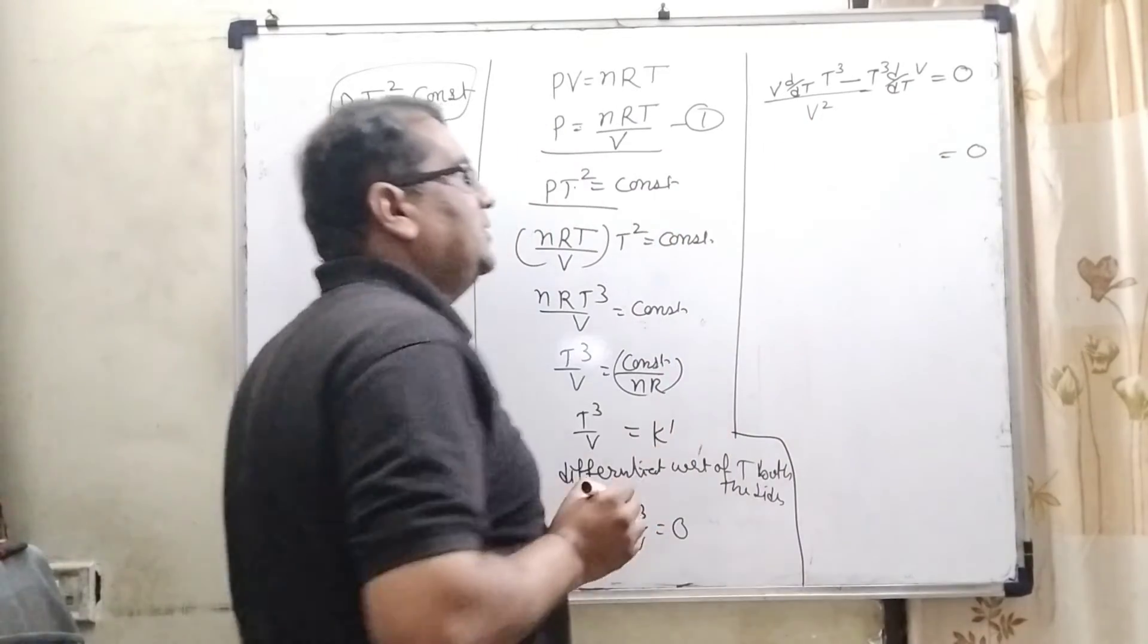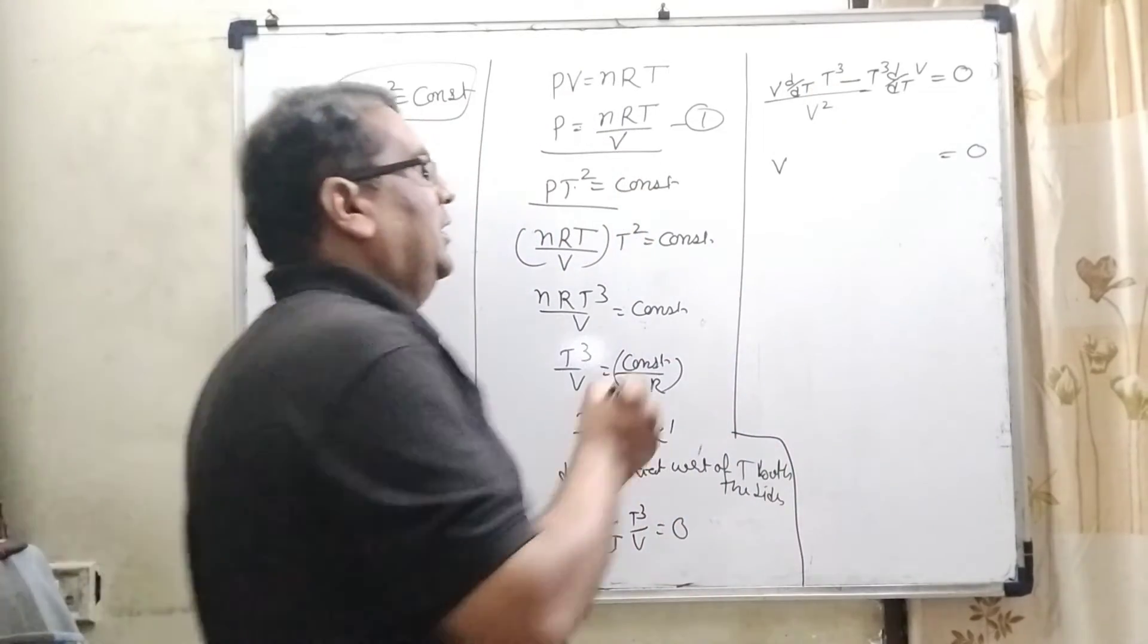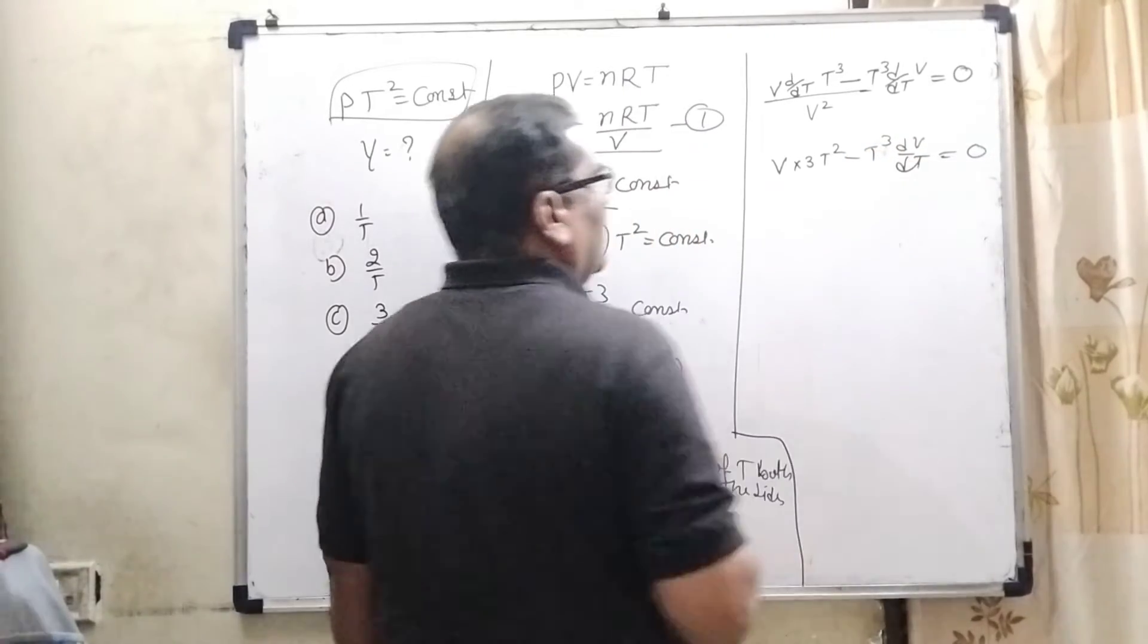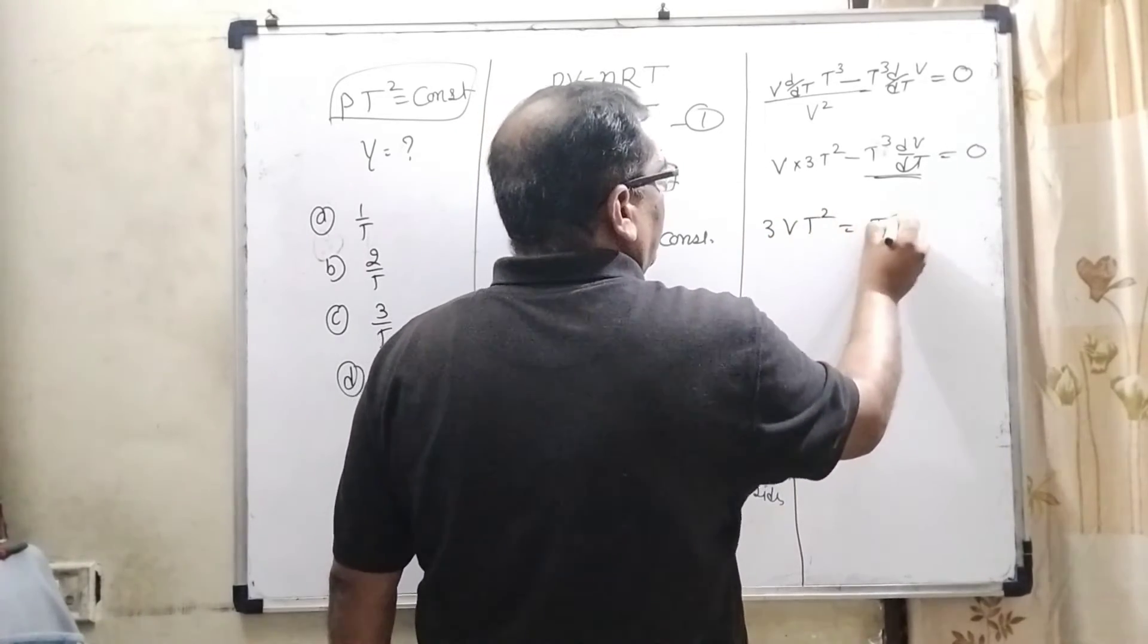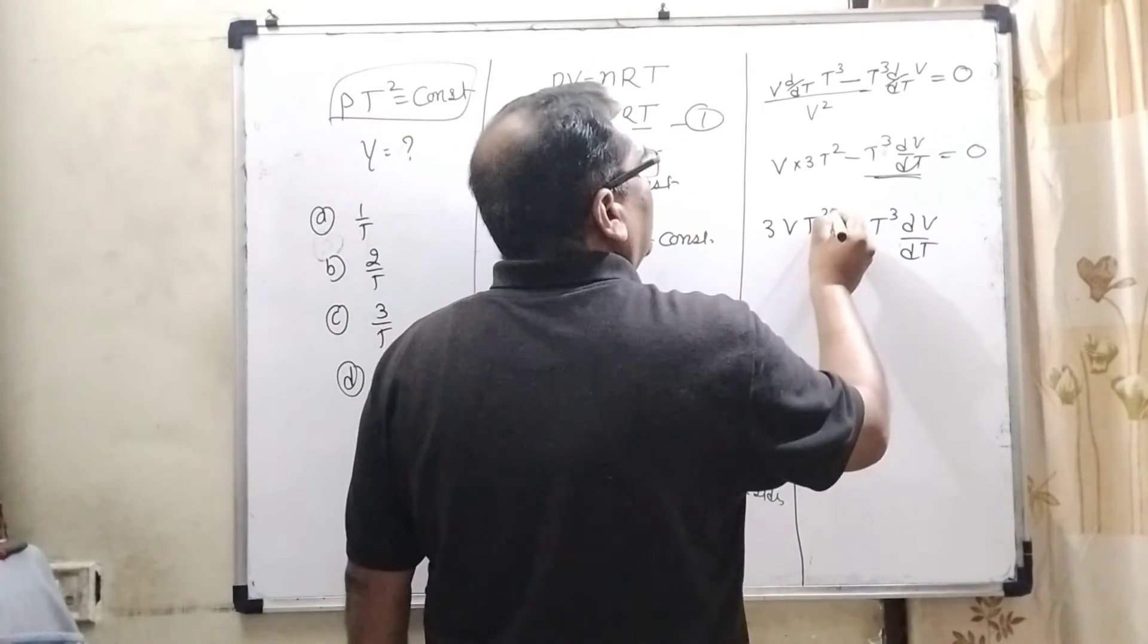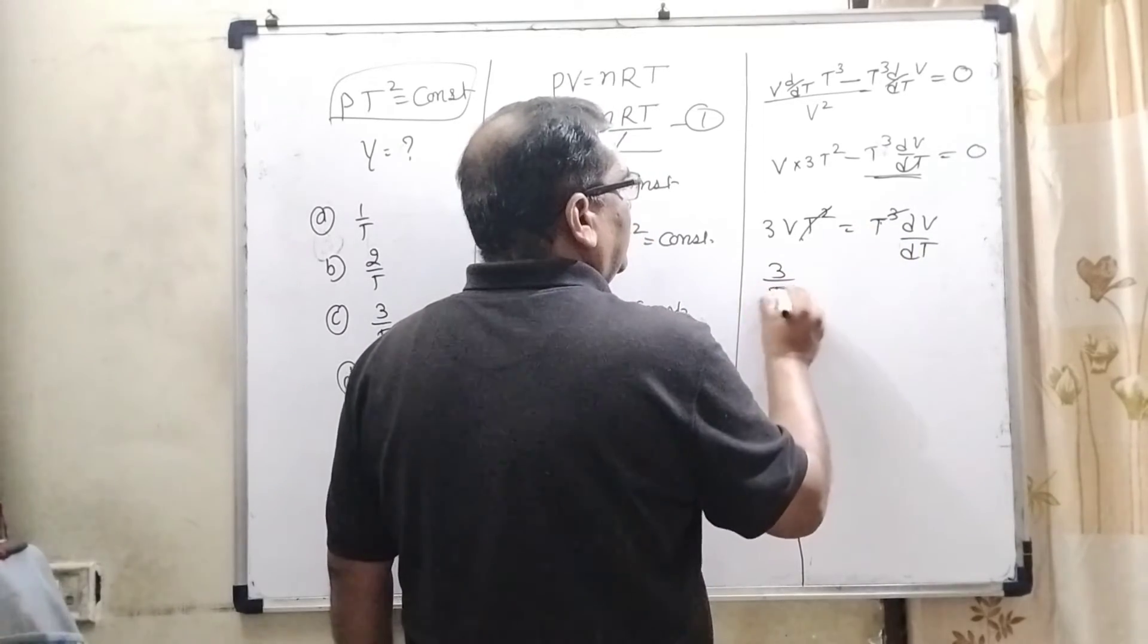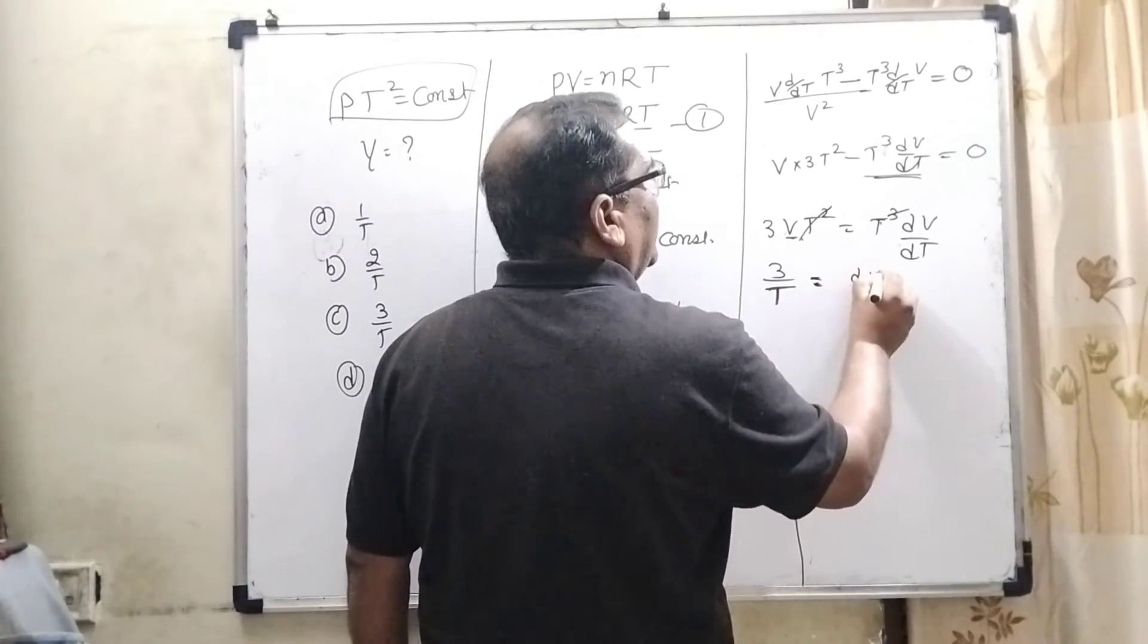So this V² multiplied by 0 gives us 0. So here V, and what is the differentiation of T³? Here 3T² minus T³ dV/dT. Now transposing this term to the right side, 3VT² = T³ dV/dT. Now here T² cancels and one T remains. 3 and this T is transposing to the left side in denominator and this V transposing to the right side in denominator.